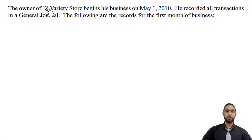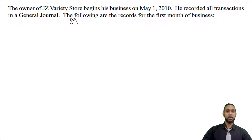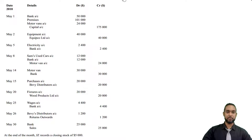The question reads: the owner of Jay-Z Variety Store begins his business on May 1st, 2010. He recorded all transactions in a general journal. The following are the records for the first month of business. So we have 10 sets of transactions. And at the bottom, it tells us that at the end of the month, Jay-Z records a closing stock of $5,000.